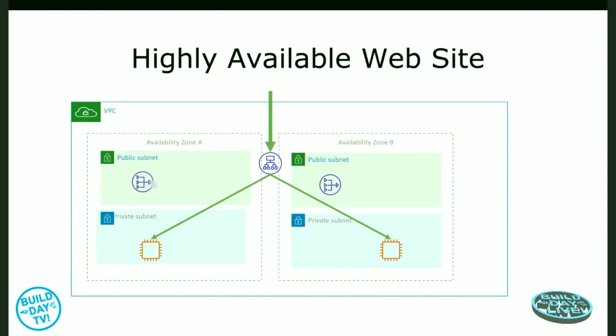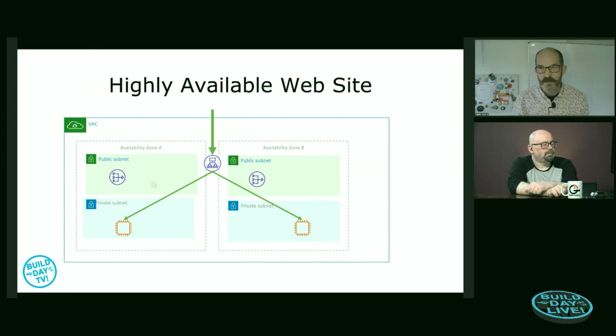How many availability zones should you plan for when building a website? It really depends on the scale of your environment. Using two availability zones would be our minimum, because then we're immune to a failure of one. But we need to think about the blast radius of that failure — if I'm using two and one fails, I've lost half of my resources. Most regions have at least three availability zones. There's one with four in Tokyo, and North Virginia has six.